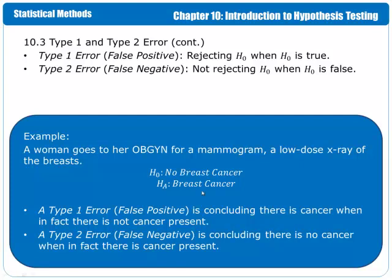So in the example of the woman having the mammogram, a type 1 error, or a false positive, would be concluding that there is cancer when, in fact, there is not cancer. A type 2 error would be a false negative, which is concluding that there is no cancer when, in fact, there is cancer. So in both of these cases, an error was made.